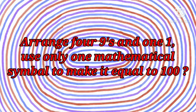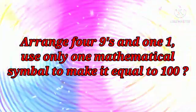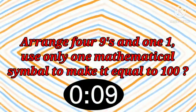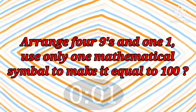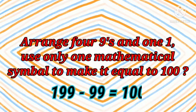Arrange four 9's and one 1. Use only one mathematical symbol to make it equal to 100. Time starts now. Answer is 199 minus 99 equals 100.